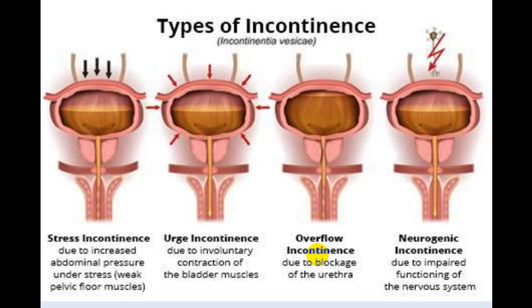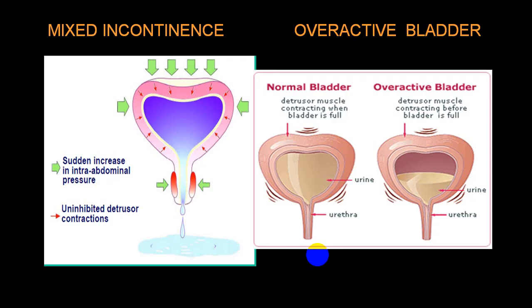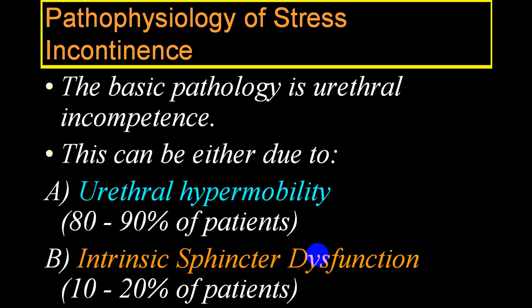In urge incontinence there is involuntary contraction of the bladder due to irritation of the bladder wall, which produces incontinence. In both stress and urge varieties there will be partial evacuation resulting in residual urine volume. In overflow incontinence there is blockage at the vesico-urethral junction causing overflow dribbling. In neurogenic incontinence there is obstruction at the level of the bladder neck with impaired neuronal functioning. The basic pathophysiology of urethral incompetence is urethral hypermotility in 80 to 90 percent of patients, while intrinsic sphincter dysfunction occurs in only 10 to 20 percent.